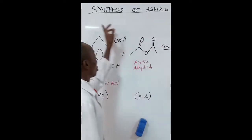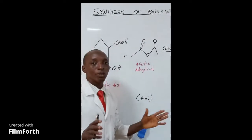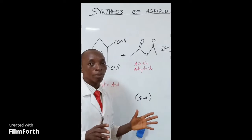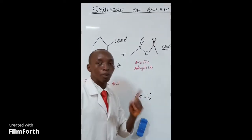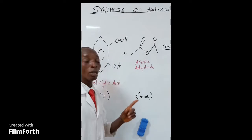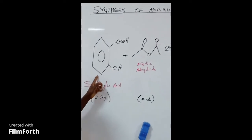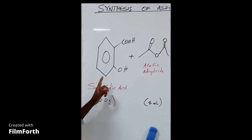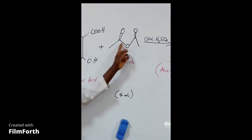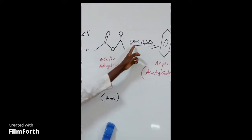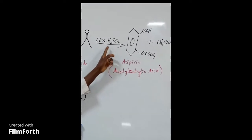Synthesis of aspirin. We want to prepare aspirin in the lab. One of the easy ways to prepare aspirin in the lab is by a process we call acetylation of salicylic acid. That is, we make salicylic acid react with acetic anhydride in the presence of concentrated sulfuric acid as catalyst.